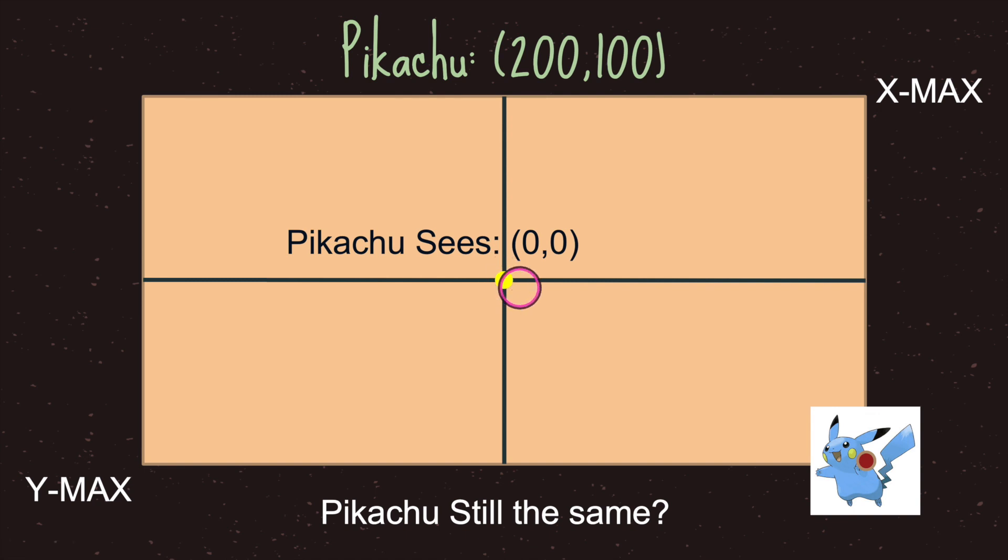So when we move our root node our Pikachu's X and Y values do not change. They just move along in relation to where our root node is. All Pikachu sees is zero and zero and moves its positional value accordingly to whatever the parent node is. And in this case the parent node would be the root node.